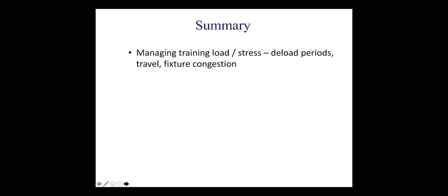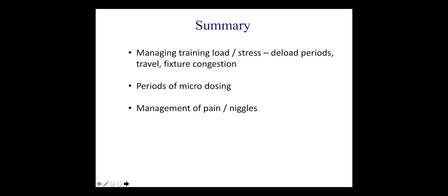In summary, we can use blood flow restriction to manage training load and stress, potentially serving benefits during deload periods, long distance travel when equipment access is minimal, and during periods of fixture congestion. It can also be used for short periods of high frequency training or micro-dosing to improve specific qualities. One thing to remember is that blood flow restriction sessions last between five and ten minutes, which is normally enough to give sufficient adaptation depending on the exercise chosen. We can also use it to reduce pain for niggles and get players through training and games, suggesting we use higher pressure — 80 percent limb occlusive pressure — which can last for up to 24 hours.